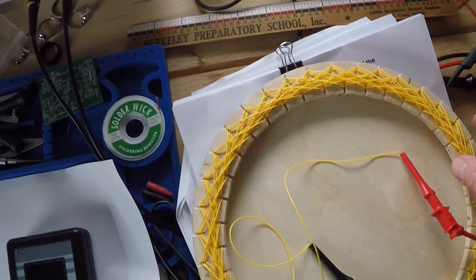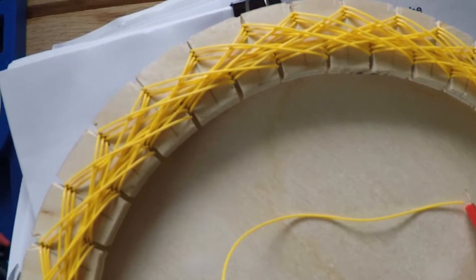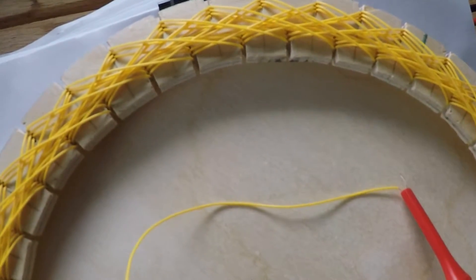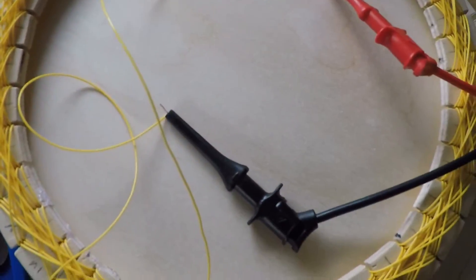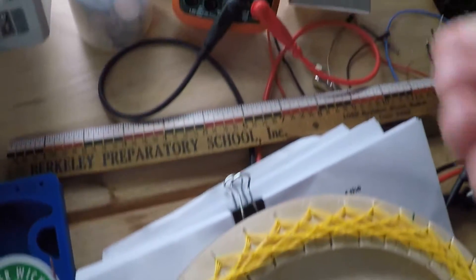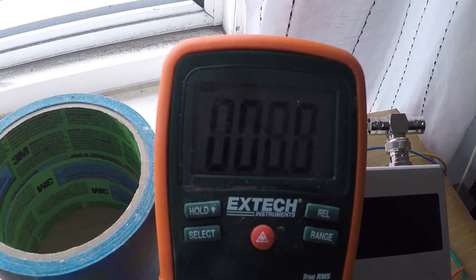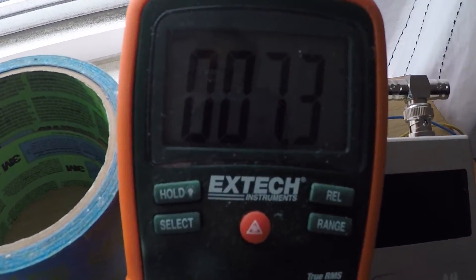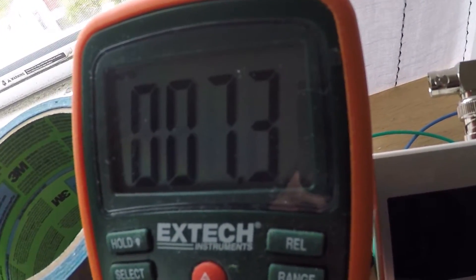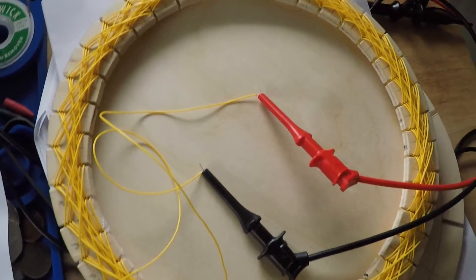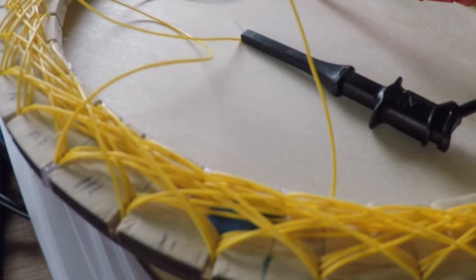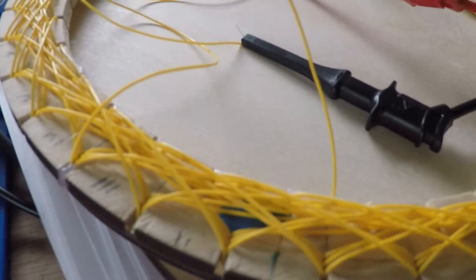So take a look: 7.1, 7.2 ohms. It's a little high, but I think that's what I get for using 30 gauge wire.